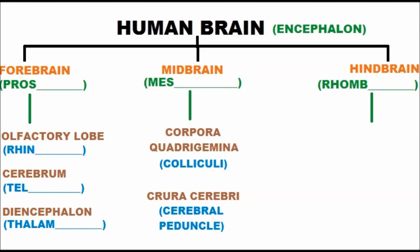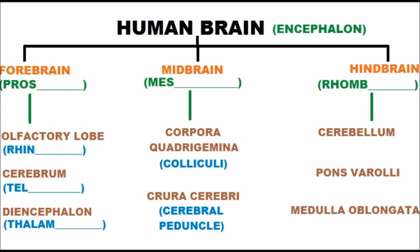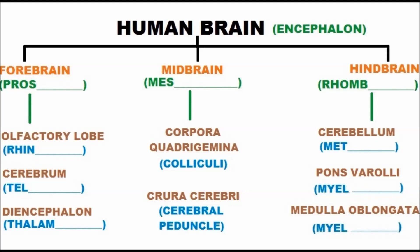The hindbrain is divided into three parts: cerebellum, pons varoli, and medulla oblongata. Cerebellum is also known as metencephalon, whereas pons varoli and medulla oblongata are called myelencephalon, because the medulla oblongata extends as the spinal cord, also called myelin.